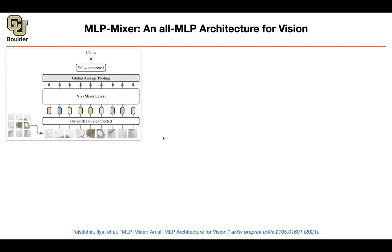The idea is actually very similar to what attention does. You have your image, you break it into a sequence of patches — maybe 16 by 16 — then you push it through a linear operation to give lower dimensions to these vectors. Rather than pushing it through N layers of transformers, you push it through N layers of MLP Mixer, then put a global average pooling over all the output vectors, add a fully connected layer on top, and do your classification.